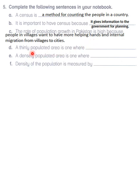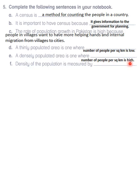A thinly populated area is one where the number of people per square kilometer is low. A densely populated area is where the number of people per square kilometer is high. And density of population is measured by the number of people per square kilometer.